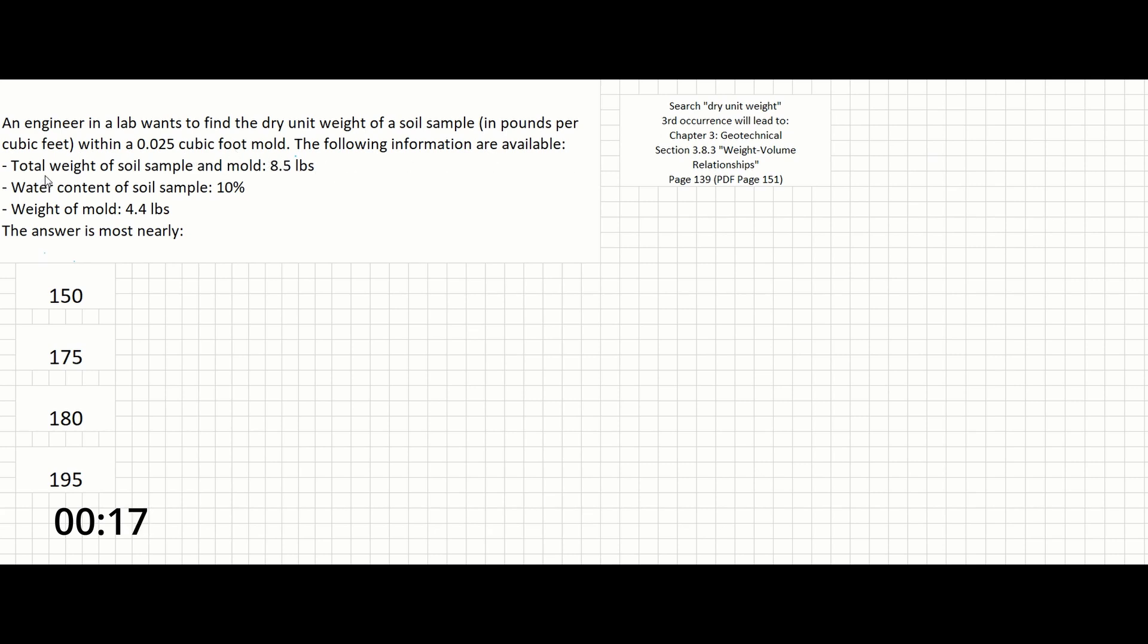The total weight of the soil sample and mold is 8.5 pounds. The water content of the soil sample is 10 percent. The weight of the mold is 4.4 pounds and the answer is most likely one of the following.